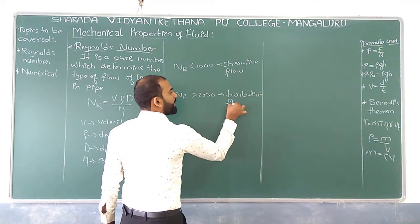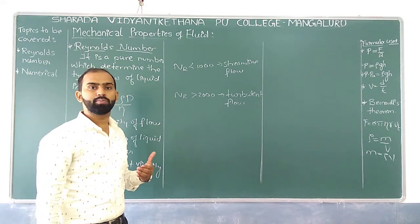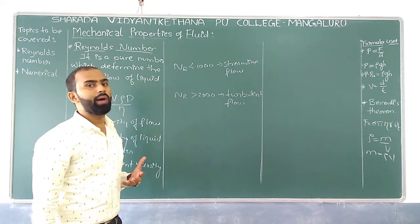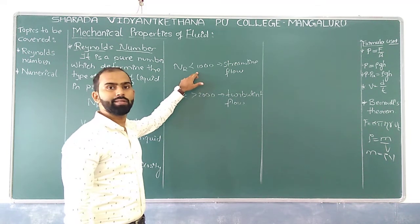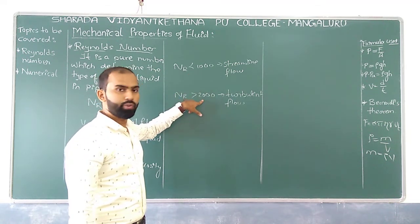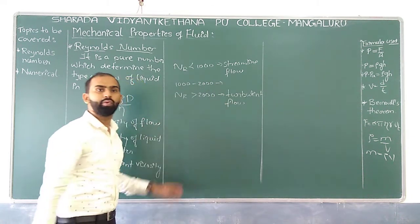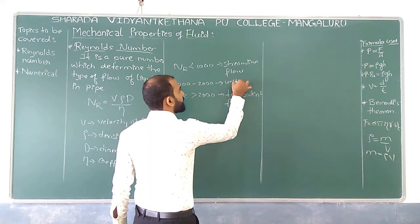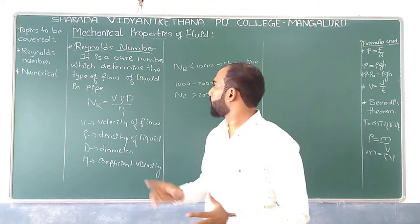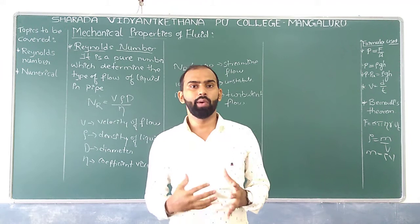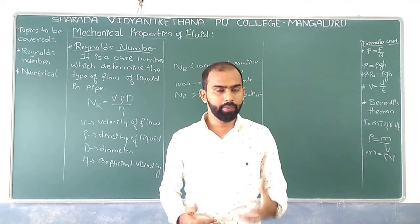What do you mean by turbulent flow? Turbulent flow means the fluid is moving more than a critical value for that particular liquid. And if NR lies in between 1000 to 2000, then the fluid is unstable. By having the value of Reynolds number, we get to know whether the fluid is streamlined, turbulent, or unstable.